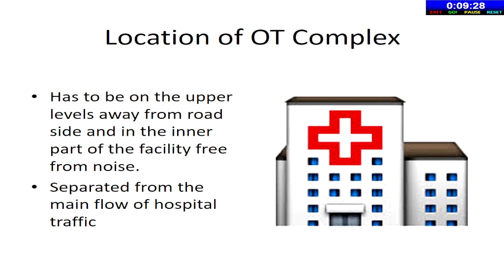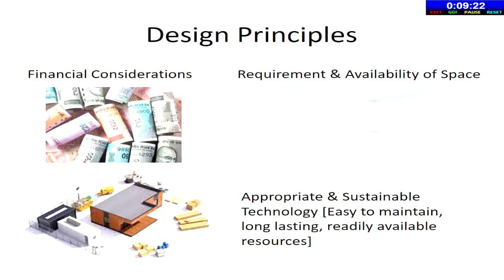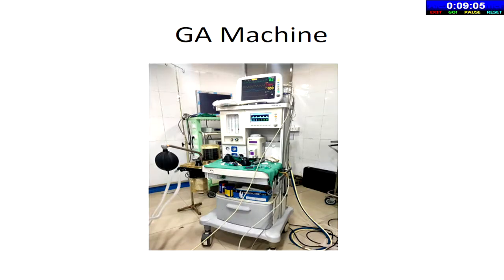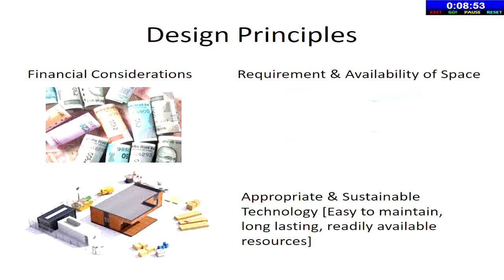The OT complex has to be located on the upper and innermost part of the facility to minimize dust exposure. Always set aside a budget and decide its upper and lower limit. Planning has to be done depending on the availability of funds and space. Decide in the initial phase only if you are planning to offer GA, as extra space is needed for the anaesthesia machine and additional design is needed for suction and oxygen outlet systems. Always use materials which are readily available, durable, easy to maintain, and resistant to microorganisms.